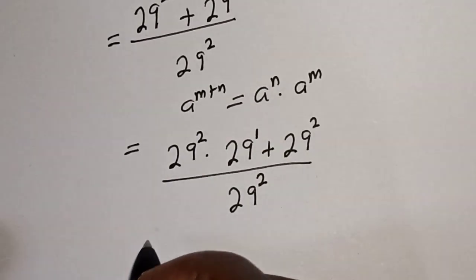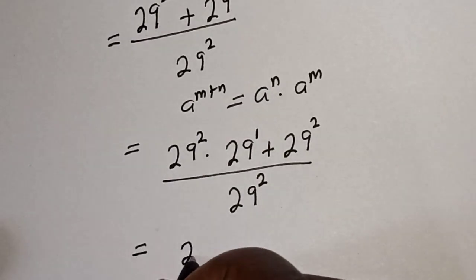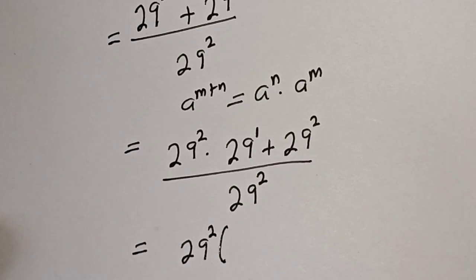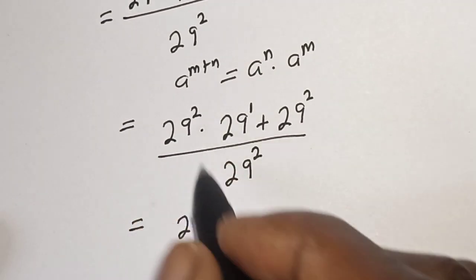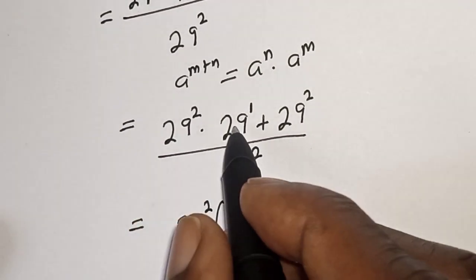Then here, 29 squared is common. Let's bring it out. This is equal to 29 squared, bracket, 29 squared divided by 29 squared, that is 1 times 29 squared.